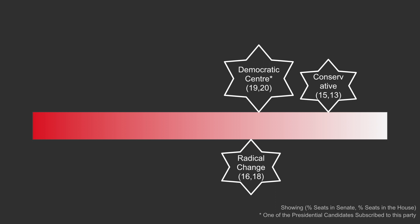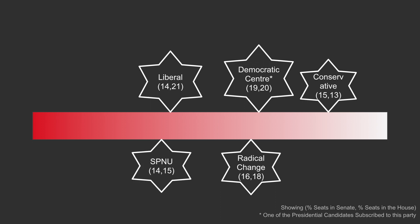Next is the first leftist party in the Senate; however, they are the largest party in the House of Representatives. They are the Liberals, a center-left party, and they are the party who Radical Change broke off of. Next is the Social Party of National Unity. This is the party the current president is from, and it has done very badly in the elections this year. This party endorses liberal ideas like welfare, but also supports decentralization.